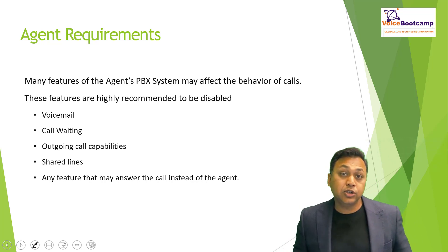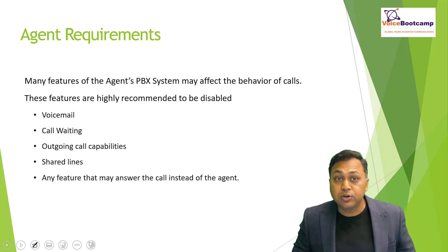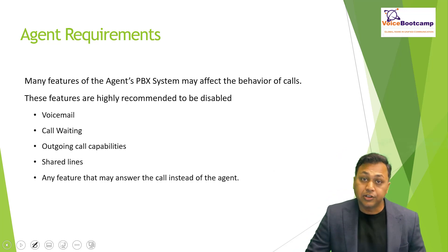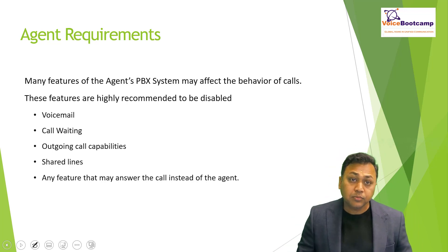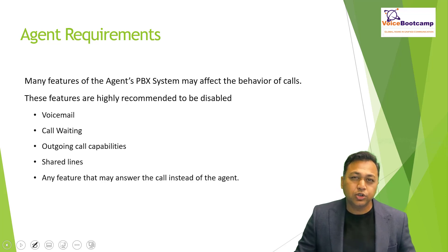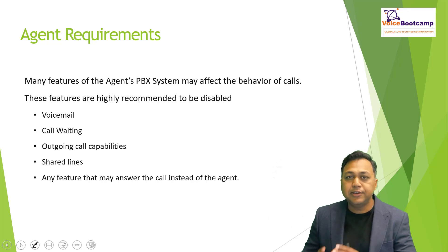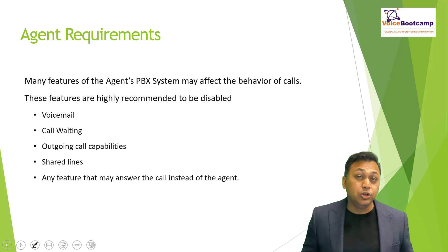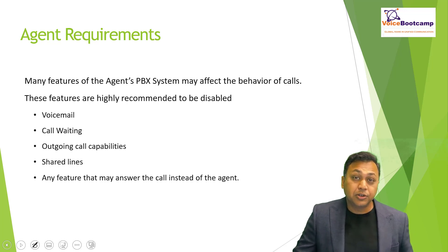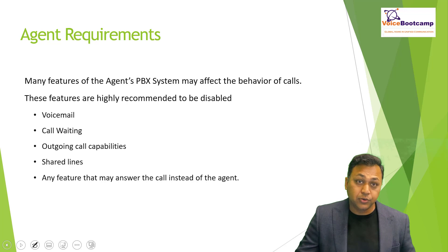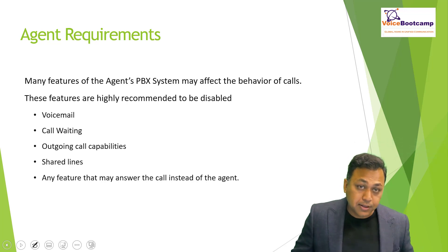Therefore, voicemail should be disabled on the line designated for contact center calls. Call waiting is another feature to consider — if an agent is on a personal call, an incoming contact center call may just be waiting and the agent won't know. That is another feature you want to disable. Outgoing call capability is also something you may want to disable on the contact center line — you don't want agents making outbound calls on that line, because the system will treat the agent as busy, creating a wrong impression of agent availability.